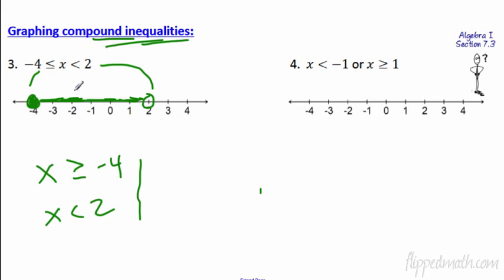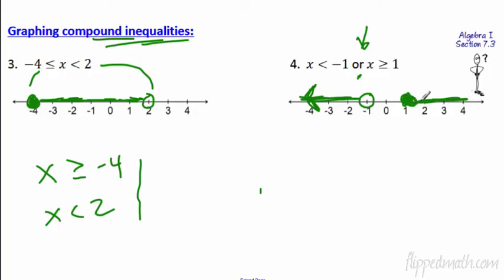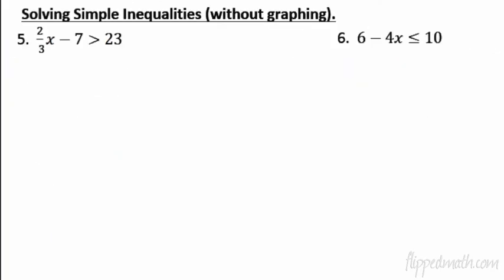What happens if it's not in the middle? Then they use an 'or.' X is less than negative 1 — open circle — or X is greater than or equal to 1 — closed circle, shading going to the right. That's a review; if you need more help, algebra 7-3 will go through it all.